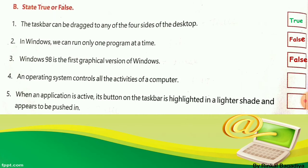Number 4: An operating system controls all the activities of a computer. Yes — the answer is true. Write in the fourth box: T-R-U-E, true. Number 5: When an application is active, its button on the taskbar is highlighted in a lighter shade and appears to be pushed in. Yes, that statement is true. Write in the last box: T-R-U-E, true.